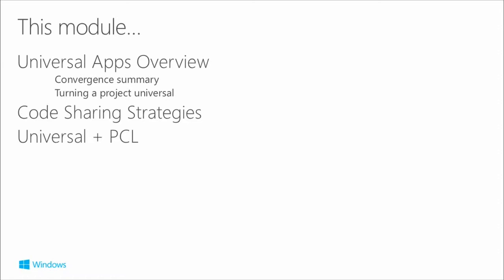We're going to do a universal apps overview. A lot of this is remedial because we've been talking about universal applications throughout the entire series. I'll show a convergence summary, how we can take existing projects and turn them universal, and then we'll talk about code sharing strategy. I'll show an application with a universal shared project and a PCL, explaining why we put each piece where, for the best architecture and code reuse.